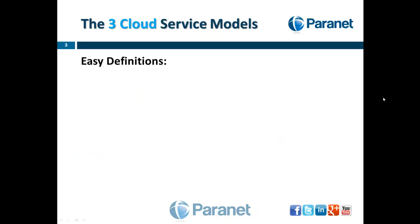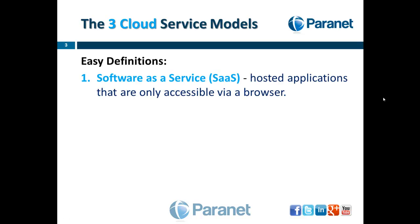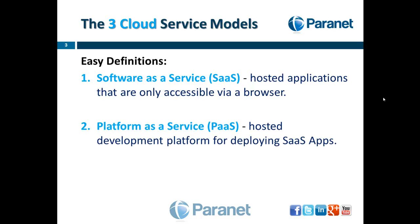Let's jump into the three cloud service model types. The first one is going to be software as a service. These are hosted applications that are only accessible via browser — Gmail, Hotmail, Google Documents are common examples for consumers.